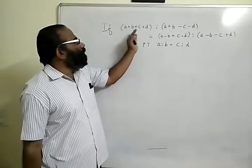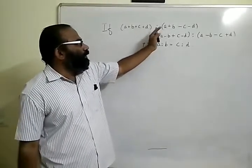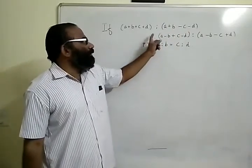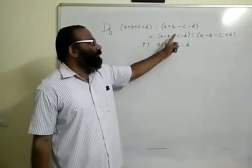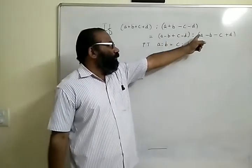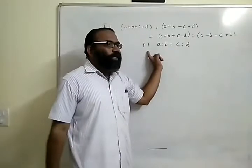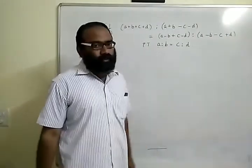If a plus b plus c plus d is to a plus b minus c minus d equals a minus b plus c minus d is to a minus b minus c plus d, prove that a is to b equals c is to d.